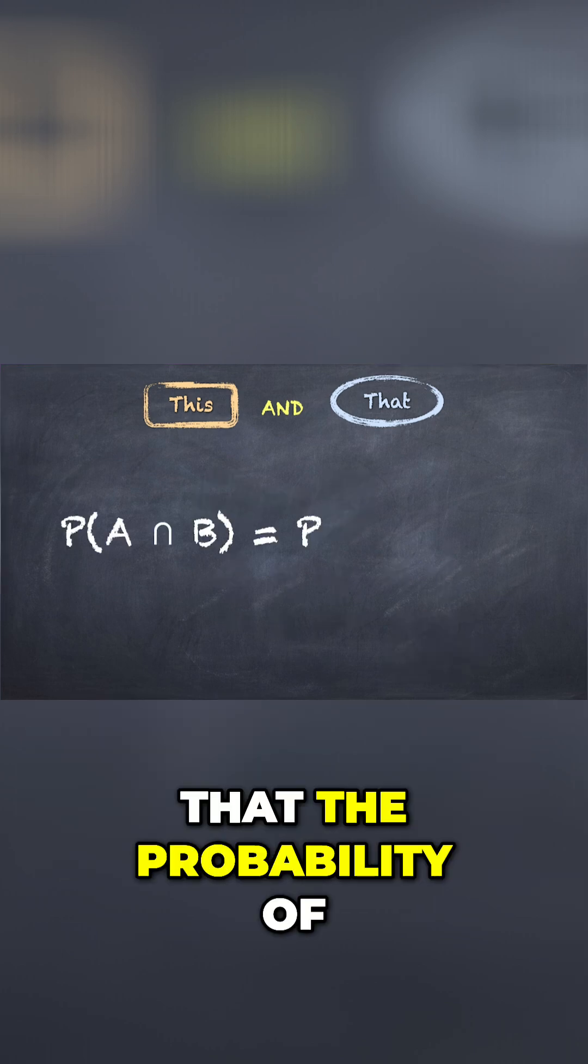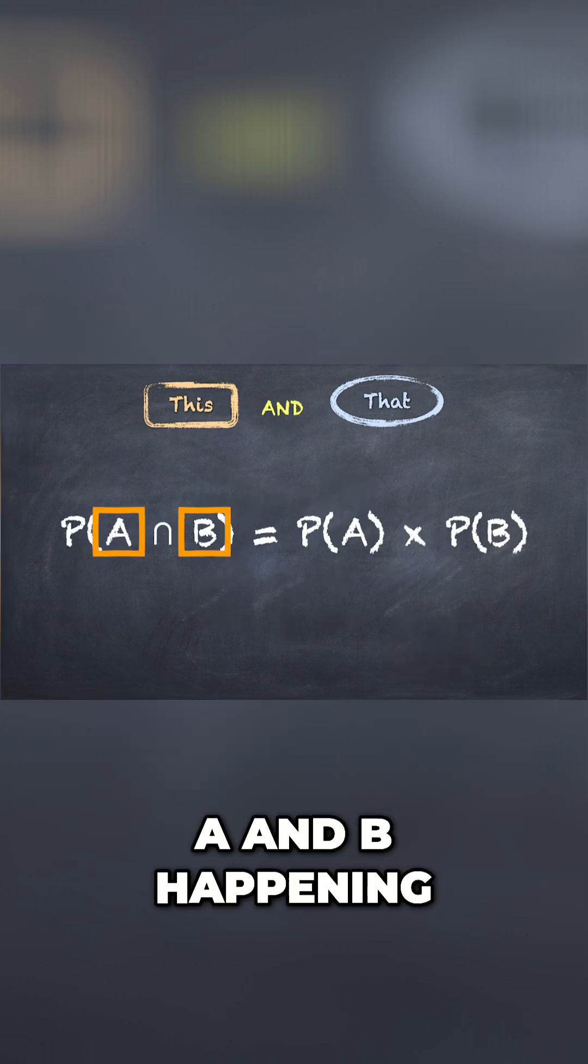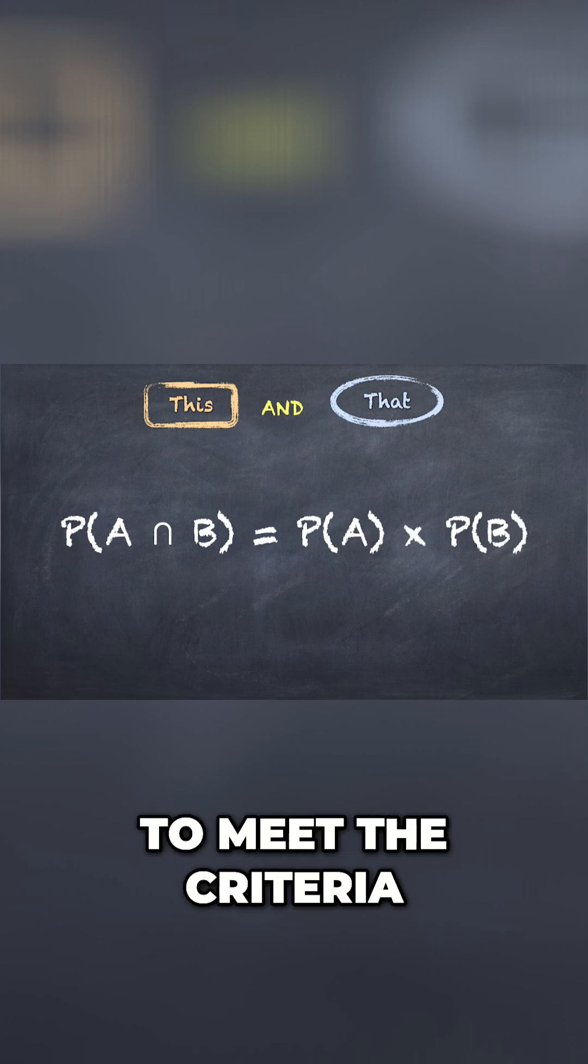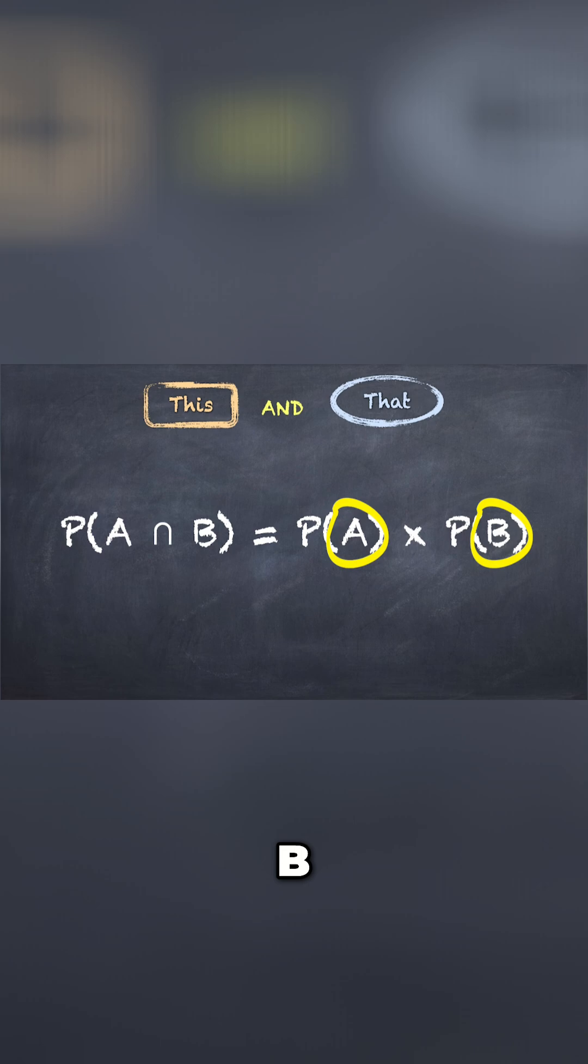So the lesson here is that the probability of A and B happening, in other words, both events must happen in order to meet the criteria, is the same as saying the probability of A times B. Now we make the assumption that A and B are independent.